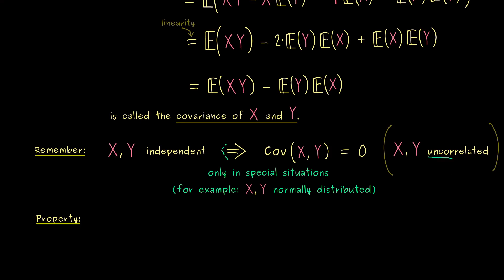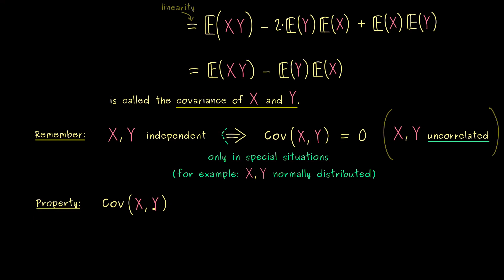So we already know, this new notion is weaker than the notion independence. Ok, then back to this property here, and maybe you have already noticed, the covariance is nothing else than the variance, if we put in the same random variable. Therefore, we can answer the following question, what is bigger, the covariance squared or the two variances multiplied?